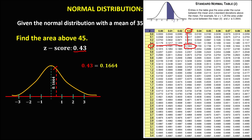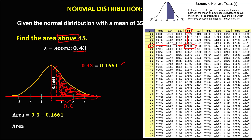Since we want above — to the right — the unknown area is away from the mean. Because it is away from the mean, we subtract: half the curve (0.5) minus the smaller area (0.1664). The total area is 0.3336, or 33.36%.